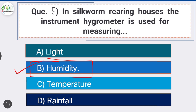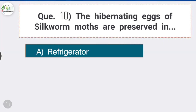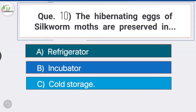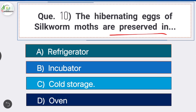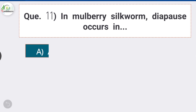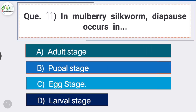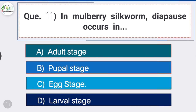If humidity falls below 70 percent during incubation, hatching is invariably low. Question number ten: the hibernating eggs of silkworm moths are preserved in — option C is the correct answer — cold storage. Question number eleven: the mulberry silkworm diapause occurs in — option C is the correct answer — the egg stage.